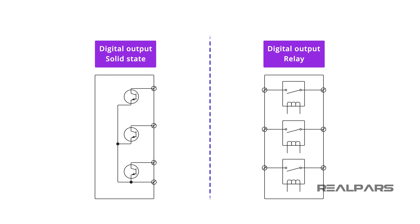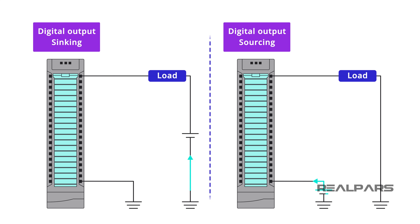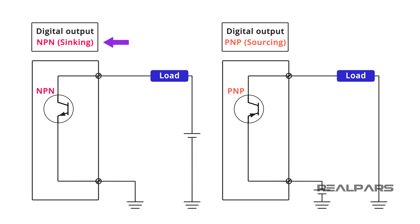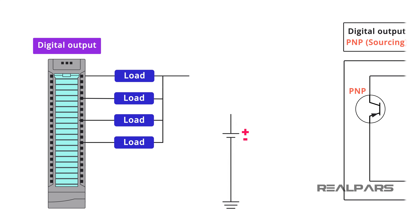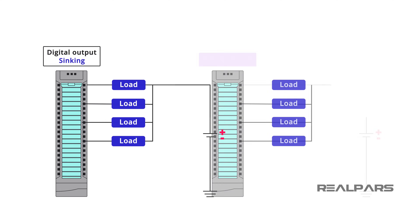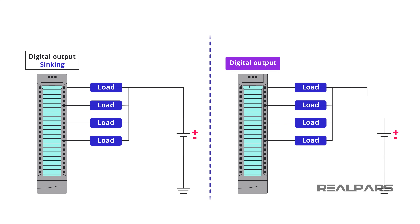Let's review what we've covered in this video. There are two types of PLC Digital Output modules: Solid State and Relay. Sinking and sourcing boil down to defining the direction of conventional current flow between two devices. A sinking module will have the current flowing into it from the load. A sourcing module will have the current flowing into the load from the module. An NPN module is a sinking module; a PNP module is a sourcing module. If the wired-together load terminals connect to the plus terminal of the power supply, you have a sinking module. If they connect to the negative terminal or ground, you have a sourcing module.